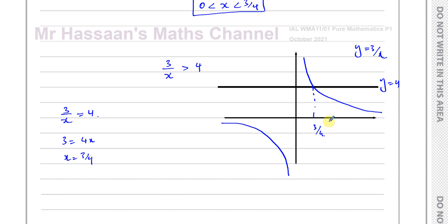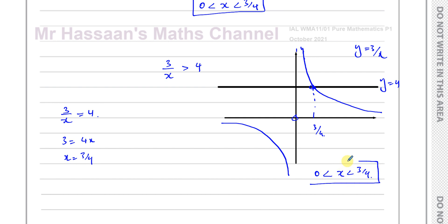We want the range of values of x for which y equals 3 over x is greater than 4 — that is, when is this curve above the line? It is above the line from just after x equals 0 up to just before x equals 3 quarters, where they meet. At x equals 0 the function is undefined. So the answer is 0 less than x less than 3 quarters, the same result as before.